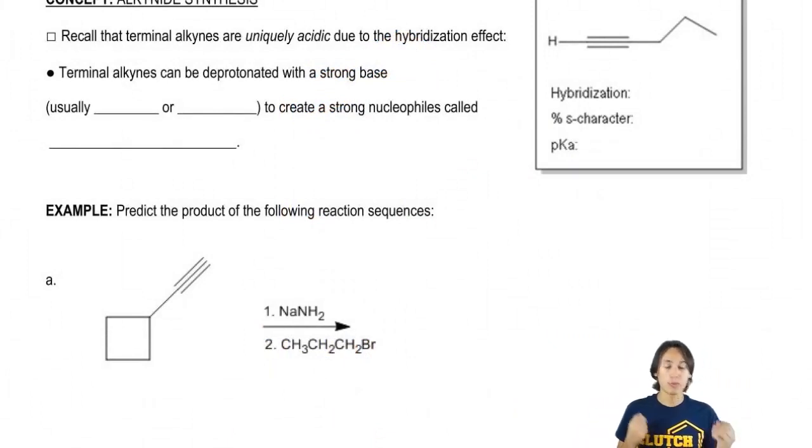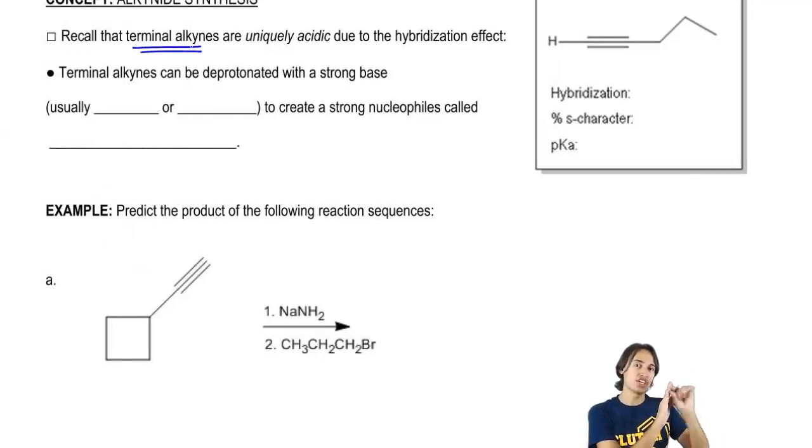Remember that we talked about in the acid and base chapters. If you didn't watch that chapter, it's fine. I'm just going to remind you now that terminal alkynes, the alkynes that have one H at the end, are uniquely acidic due to an effect called the hybridization effect.